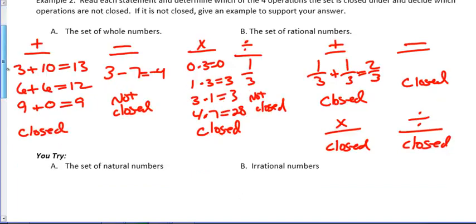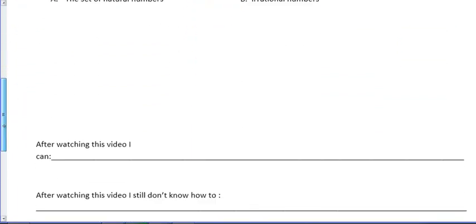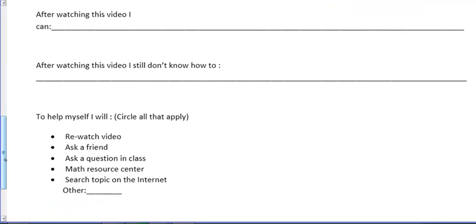So that's really it. We'll work on the you tries tomorrow in class. Remember, you have these three things at the bottom that you have to do if you want credit for your homework. After watching this video, hopefully you could be able to tell us what closure means. If not, write it here. And then check off what you're going to do to learn this concept so you do well in the quiz and test and you understand basically how our numbers work. See you tomorrow.